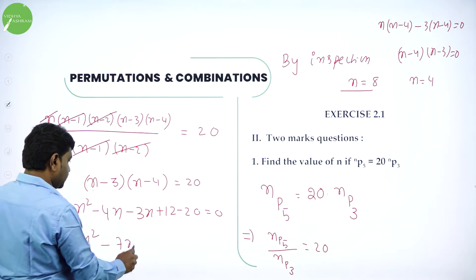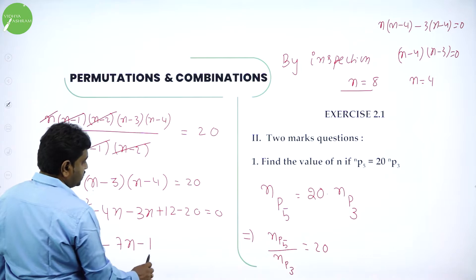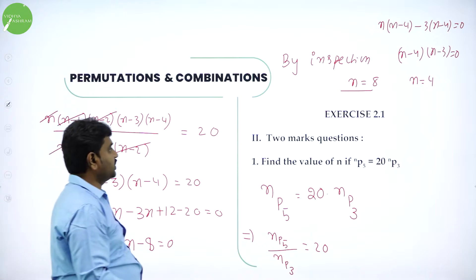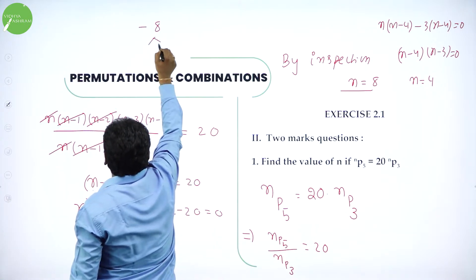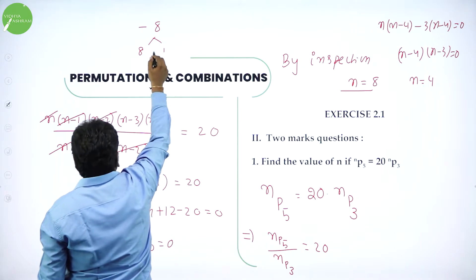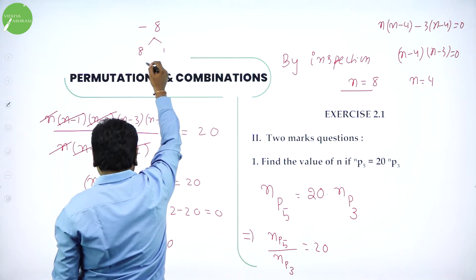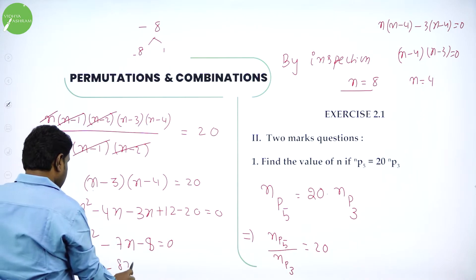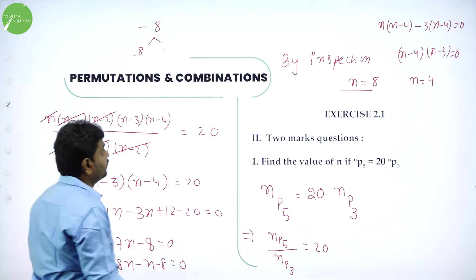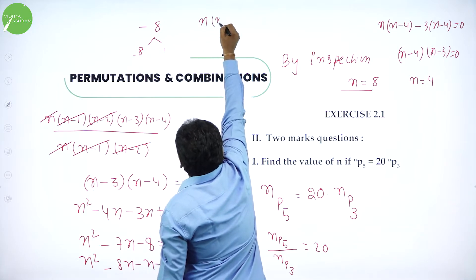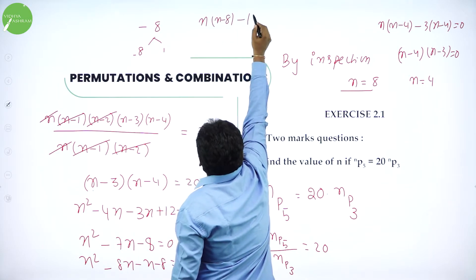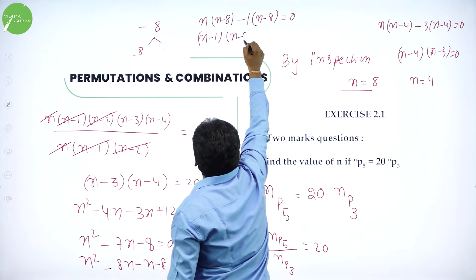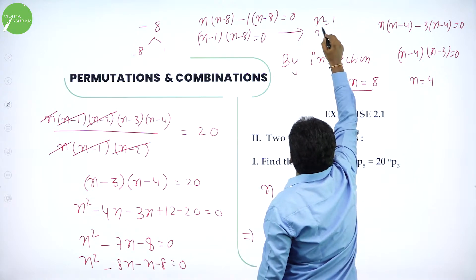If you multiply N into N: N squared minus 4N minus 3N plus 12 minus 20 equals 0, so N squared minus 7N minus 8 equals 0. Factors for minus 8: minus 8 and 1 — if you add you get minus 7. So I can write N squared minus 8N minus N minus 8 equals 0. Factorize: N(N minus 8) minus 1(N minus 8) equals 0, giving N minus 1 into N minus 8 equals 0. So N equals 1 or N equals 8.